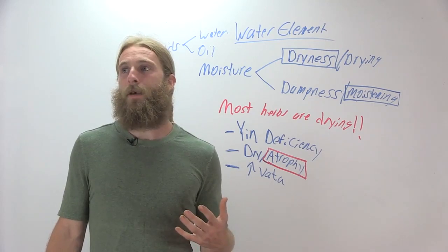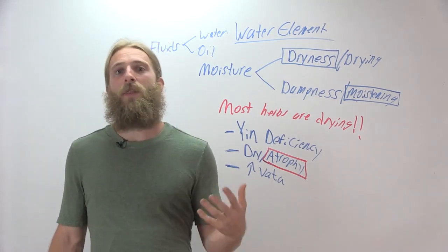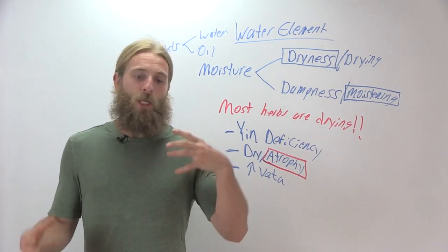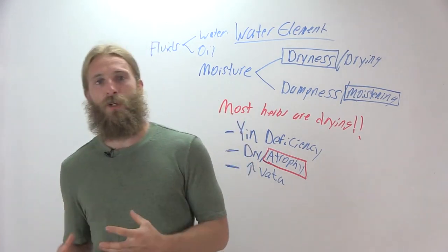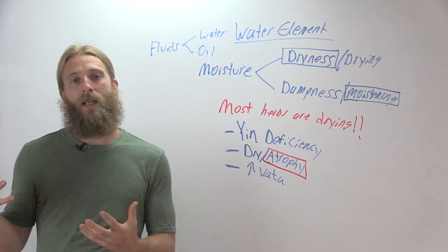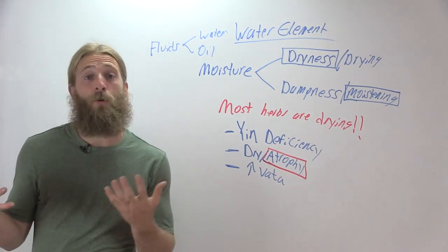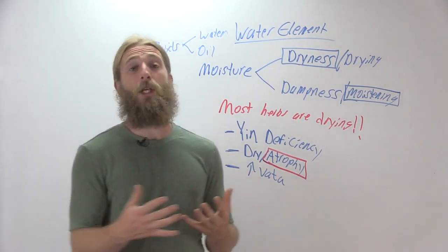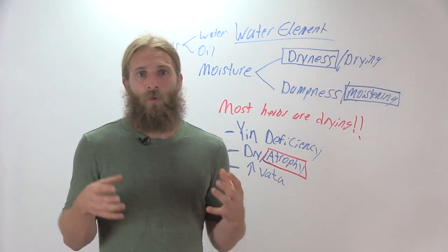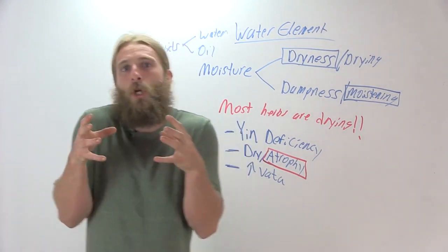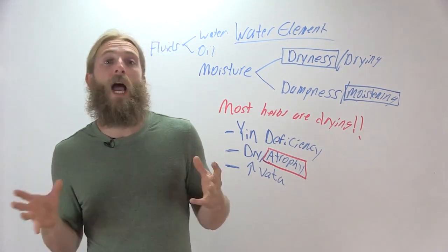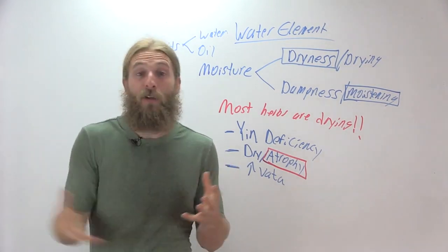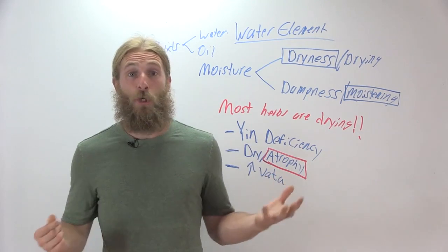One of the things that we see with a deficiency of either water or oil is this atrophy, this emaciation, this weakness that starts to happen in the body. And the reason for that is that fluids is how everything's delivered in the body. It's the delivery mechanism. If we think of the plasma of the blood, most of our body is water. And if we're deficient in that water, then the body is going to have an extremely difficult time delivering nutrients to the cells. It's like if the cell is all dried up and cracked and the river is dried up, it's going to be pretty hard to deliver nutrients to that cell to nourish it.